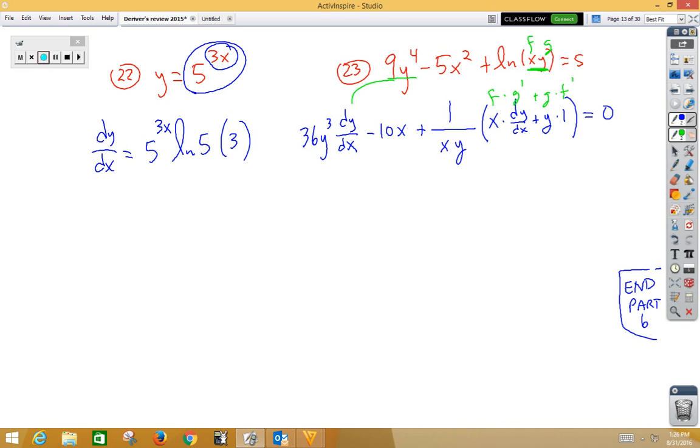So, we can now try and clean this up just a little bit. Let's start by moving the 10x to the other side. And then I would most likely distribute this term in. So, we have 36y cubed dy/dx. This 10x has been moved already. Now, when we distribute to the first term, we get plus x over xy dy/dx plus y over xy is equal to 10x. We can see at this point that we can cross out some x's there, some y's there. We need to put a 1 as a placeholder. We can move the non-dy/dx term to the other side. So, let's subtract our 1 over x to the other side.